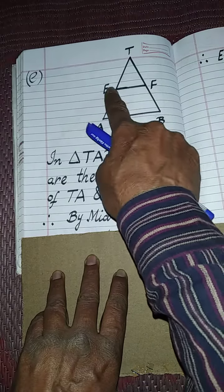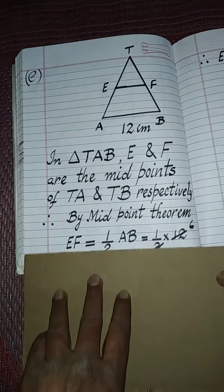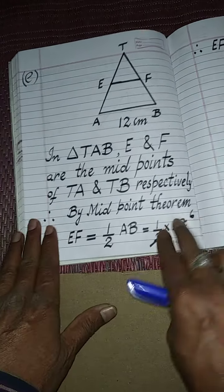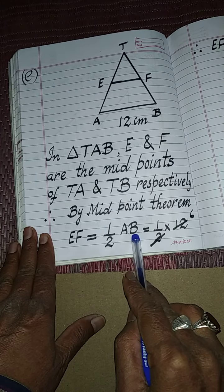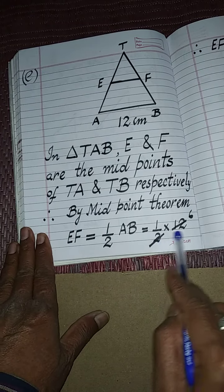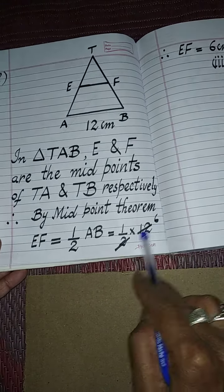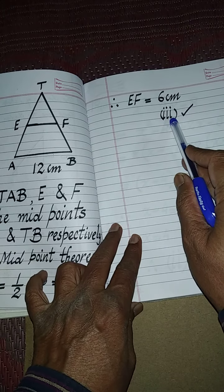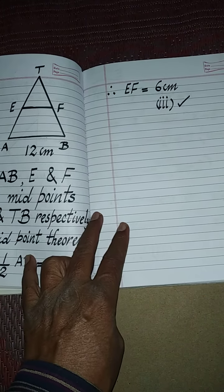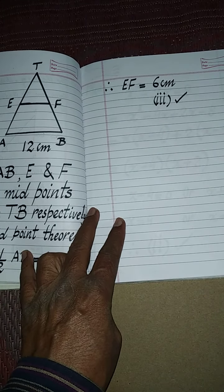So this line segment will be half of AB. According to the midpoint theorem's result, EF will be half of AB and AB is 12. So one-half times 12 equals 6. So EF will be 6 centimeters, that is why third option is correct. So I think you understood students. Thank you.